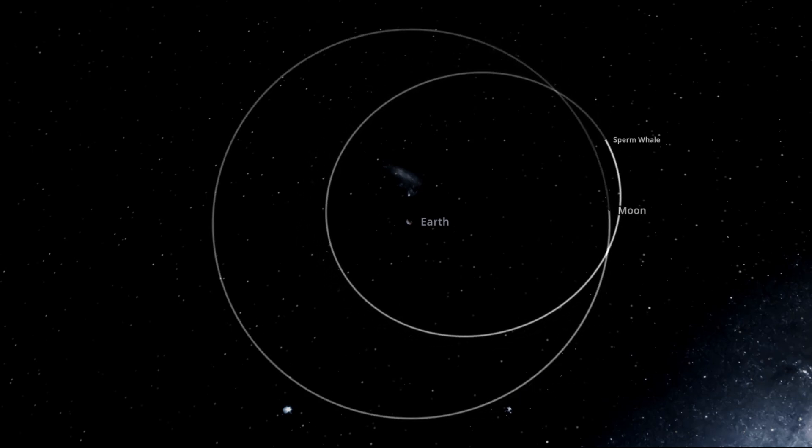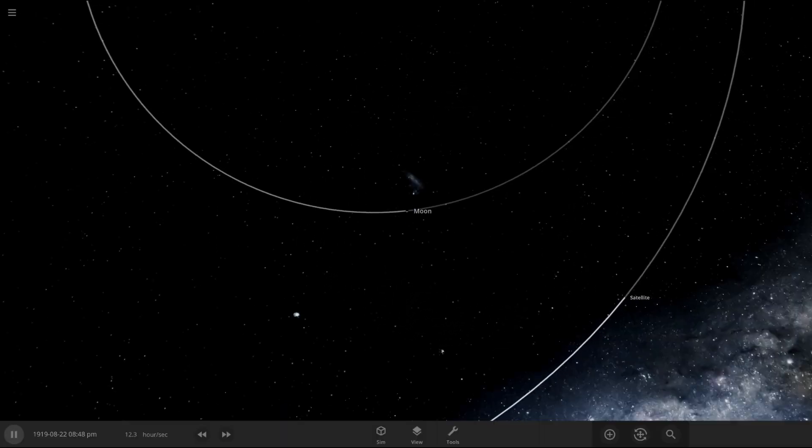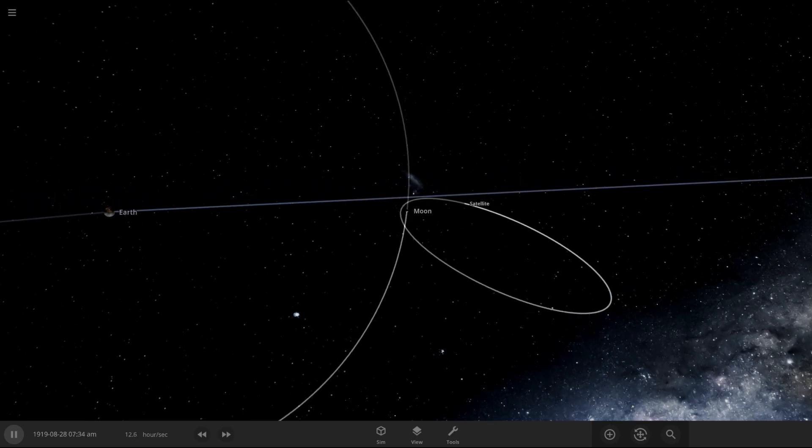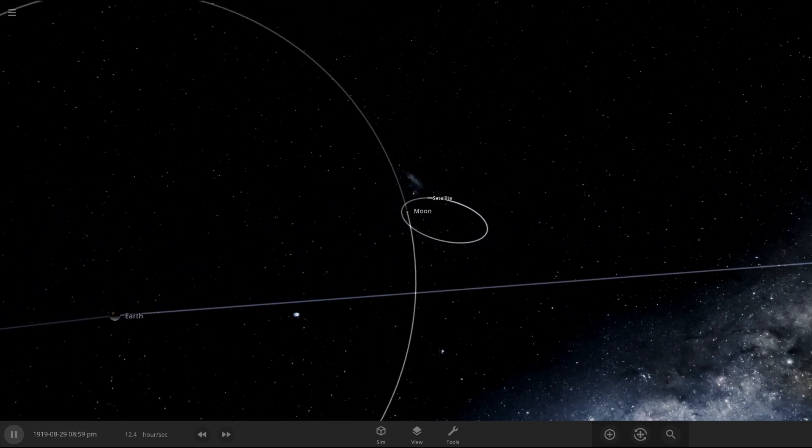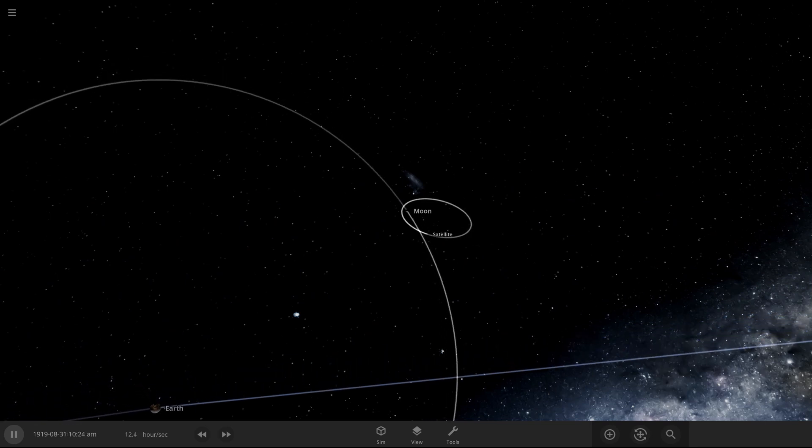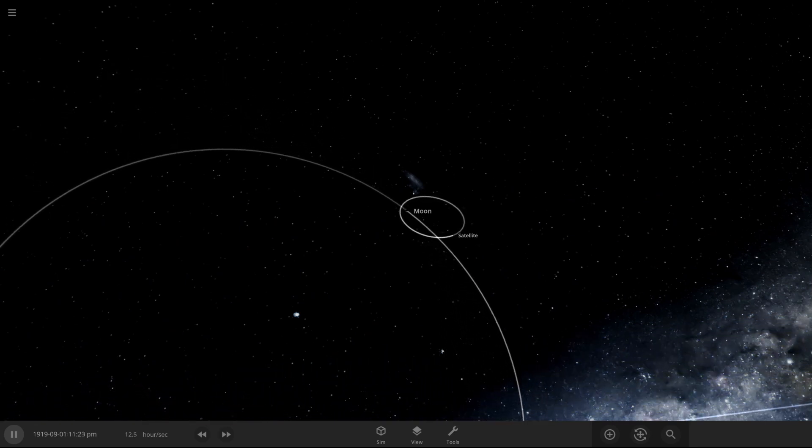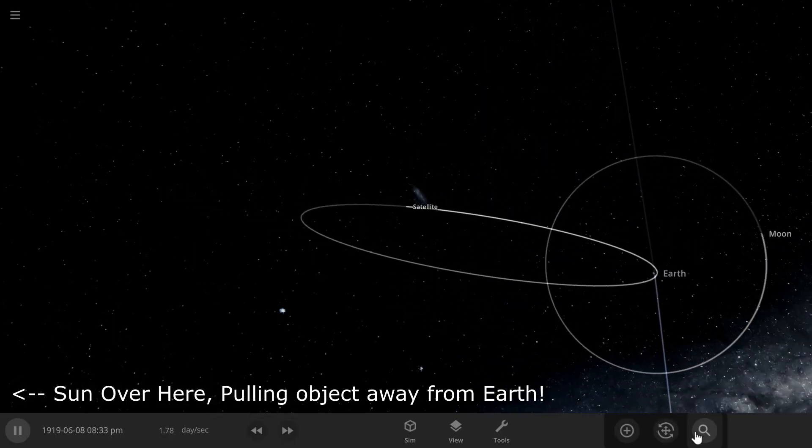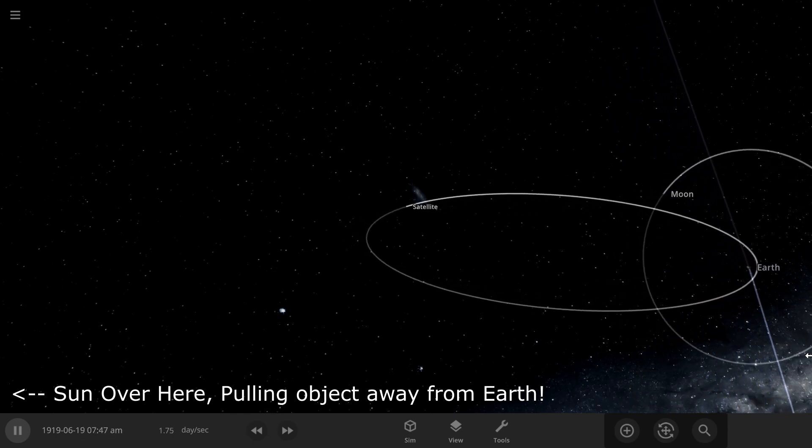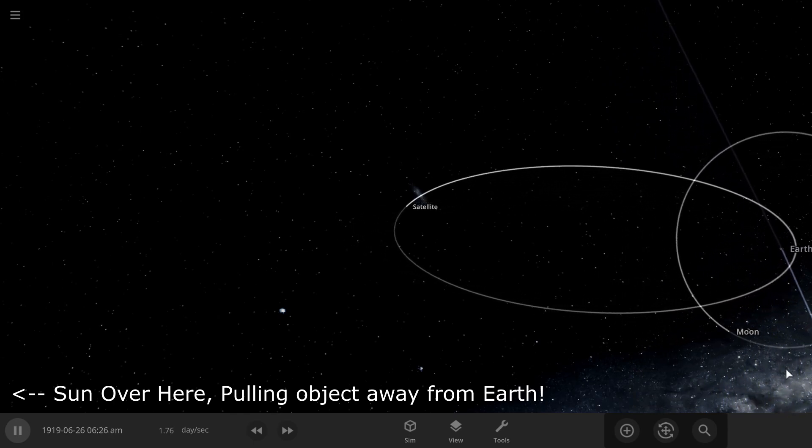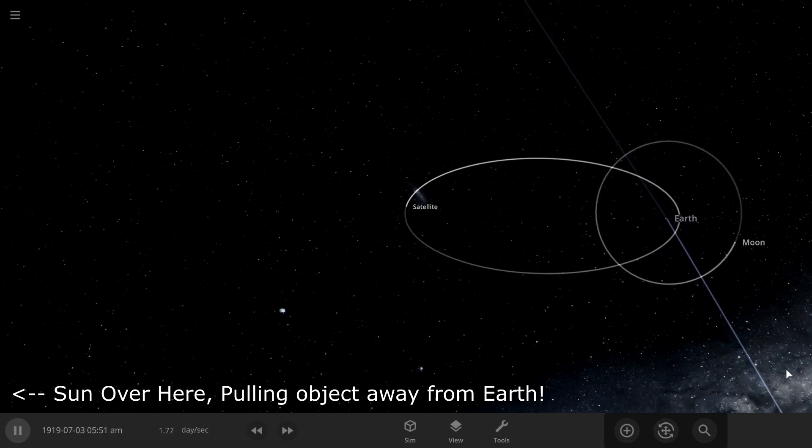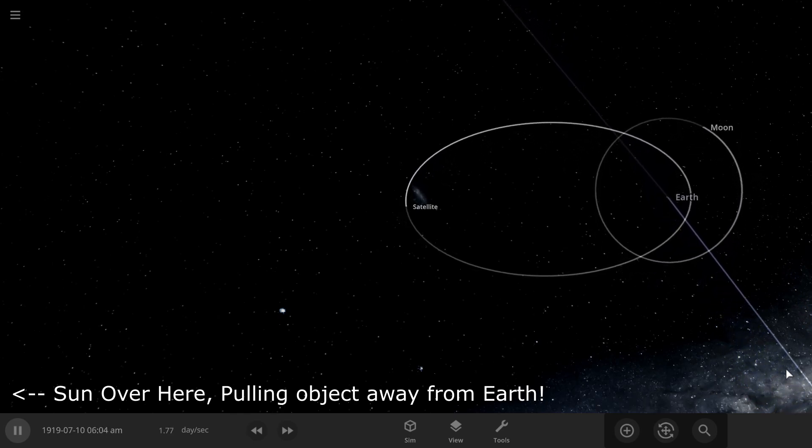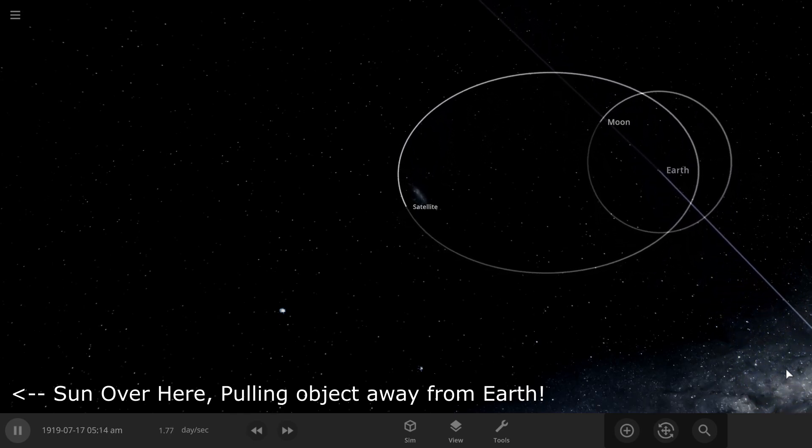There's two techniques that are involved here that are both broadly related. One is called ballistic capture, where you get captured into a loose orbit around the target without having to expend any propellant. The other technique is called weak stability boundaries, where you exploit positions in the earth, moon, sun system, where the gravity between two or more bodies cancels out to create a weak boundary between the two spheres of influence.